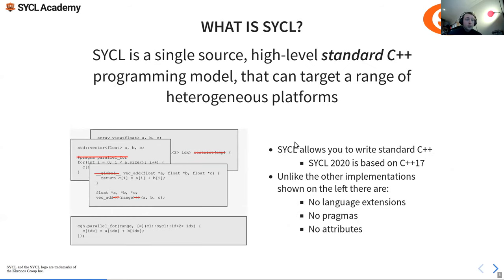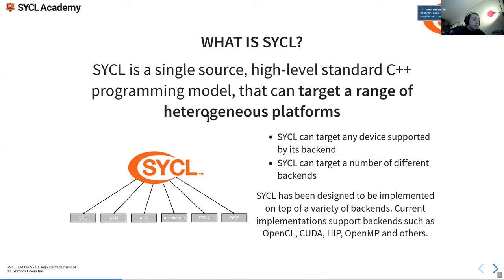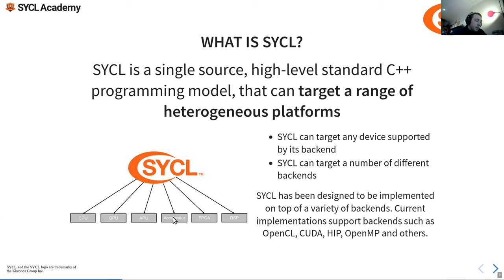Standard C++: SYCL doesn't add any language features not already in the language — they're implemented in the backend using things like lambdas and templates to write kernel code, unlike CUDA, OpenCL, or pragmas like in OpenMP. We can target a range of heterogeneous platforms — CPU, GPU, APU, accelerator, FPGA, DSP — take the exact same code and run it on as many backends as are supported. This interchangeability of offloading targets is a great strength of SYCL.